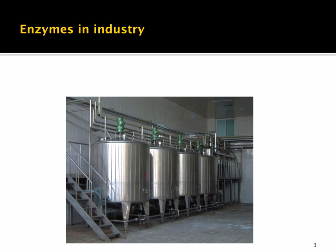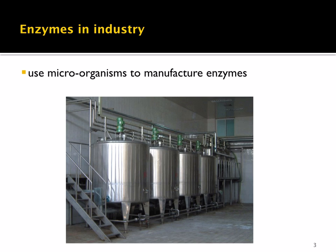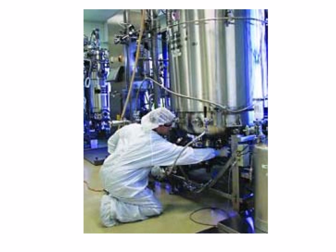Sometimes it's easier to use a microorganism to manufacture the enzyme that we want. Microorganisms produce many different enzymes and are grown in a large stainless steel vat called a fermenter. The microorganisms include bacteria and microscopic fungi. Some fermenters can hold over 500,000 litres of fermenting mixture, and the conditions within these huge tanks are controlled.